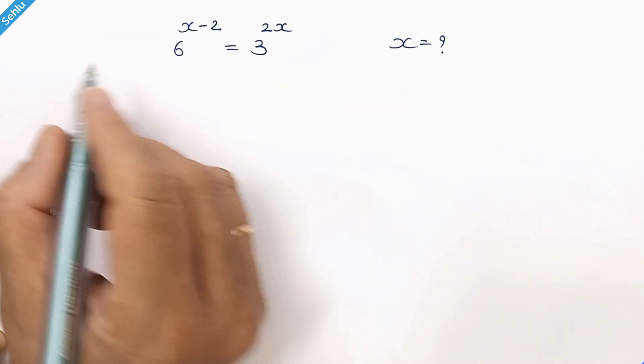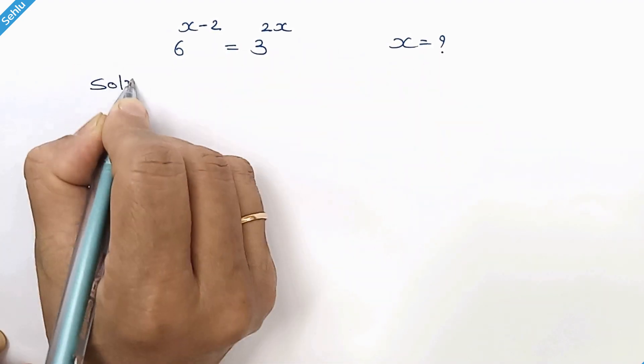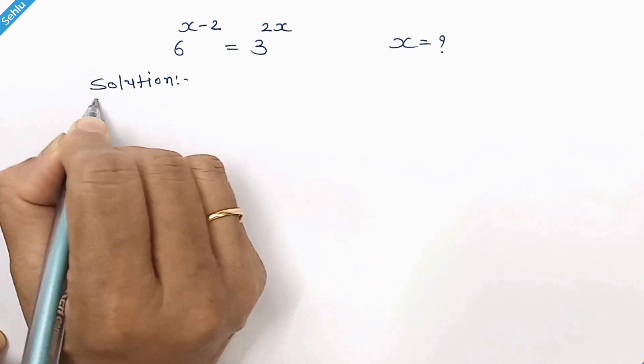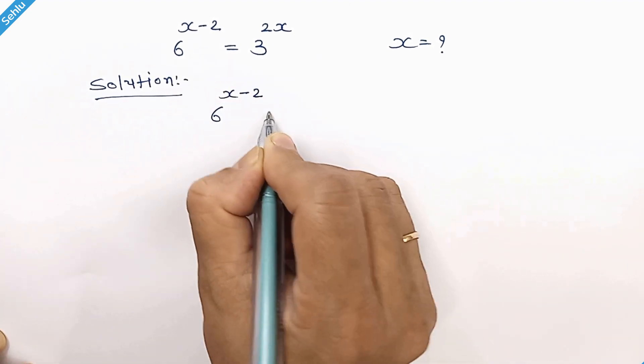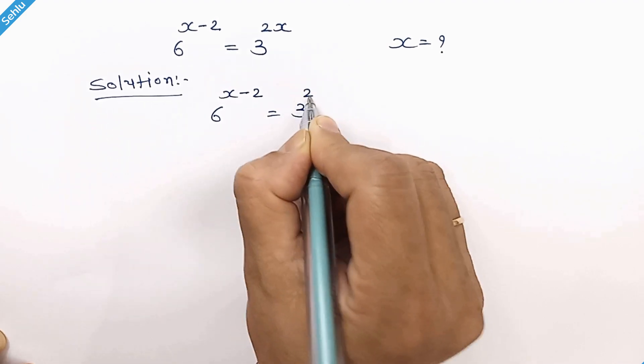Hello friends, let's solve for x. Our question is 6 to the power x minus 2 is equal to 3 to the power 2x.